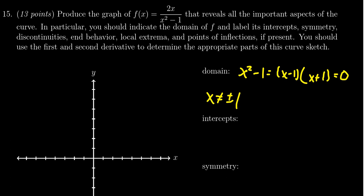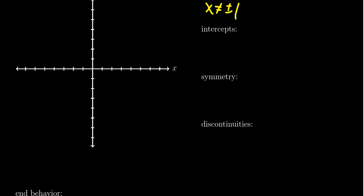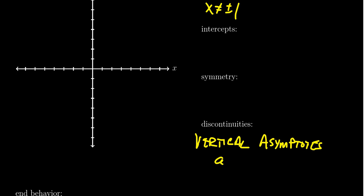It often turns out that the domain has a lot to do with the discontinuities of these functions. On this one, because we have a rational function, we know that if the denominator goes to 0 and the numerator doesn't, we have to have a vertical asymptote. So there are going to be vertical asymptotes at x = ±1.